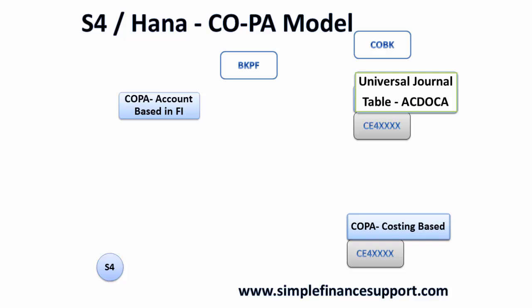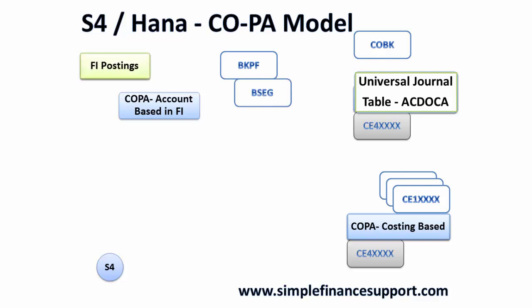In S/4 HANA, the COEP table is eliminated, while the CE1 tables remain for COPA costing-based. FI postings still go to the BKPF table, and from there the universal journal table BSEG is updated with everything, including COPA account-based information.